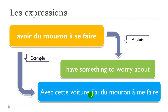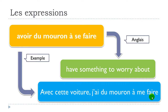AVOIR DU MOURON À ME FAIRE. If you look carefully at the expression, you'll notice that SE has been changed to ME. That's because we have the first person JE here, so it means you will have to modify your expression.